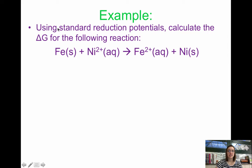First thing we need to do, because it tells us using standard reduction potentials, we need to look up the reduction potential for each of these half reactions. We have iron solid going to iron 2+. Make sure, because this is being oxidized, you're going to have to flip the equation and flip the sign of E.